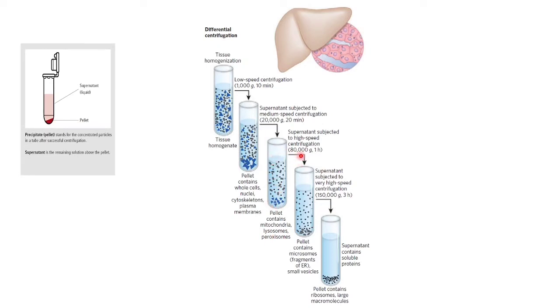At 80,000 g, this tube will be kept for centrifugation for 1 hour at high speed. After 1 hour, what will you get? After 1 hour, you will get a pellet and this pellet contains microsomes which are fragments of endoplasmic reticulum and small vesicles.